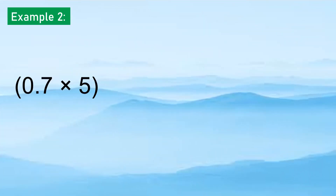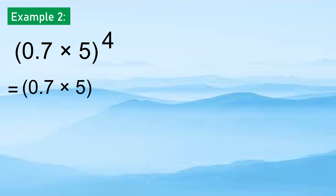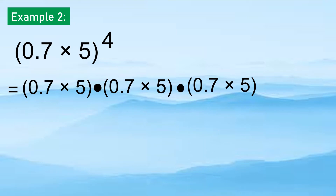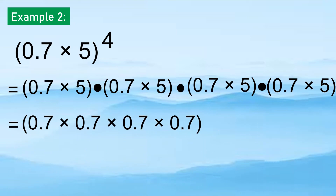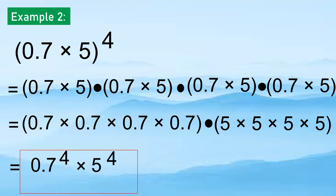Example 2: (0.7 times 5) raised to the 4th — we multiply 0.7 times 5, four times by itself, then combine like numbers and simplify to get 0.7 to the 4th times 5 to the 4th.